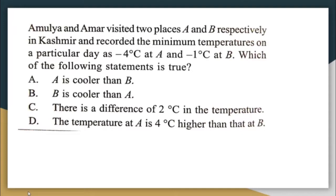The temperature at A is minus four degrees Celsius and the temperature at B is minus one degree Celsius. As the temperature goes down, the place is cooler. For example, if the temperature of one place is 30 degrees and another is 25 degrees, 25 degrees is the cooler one.